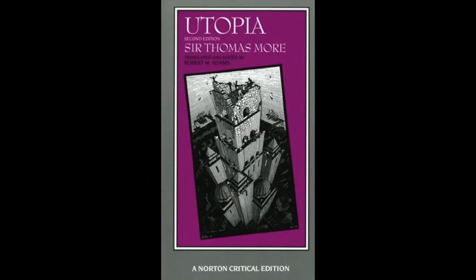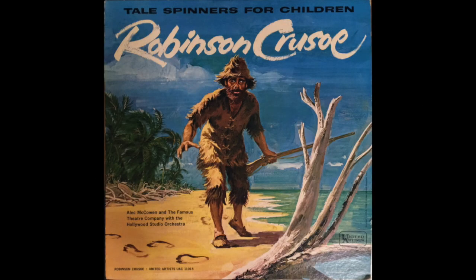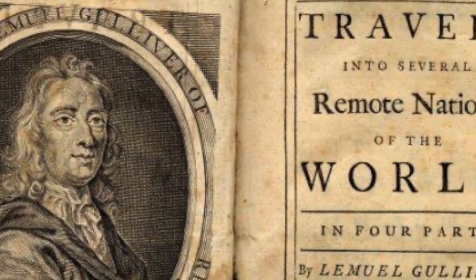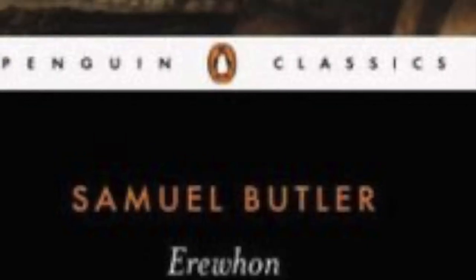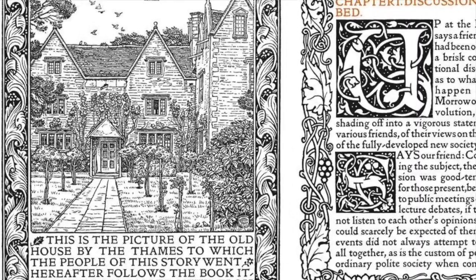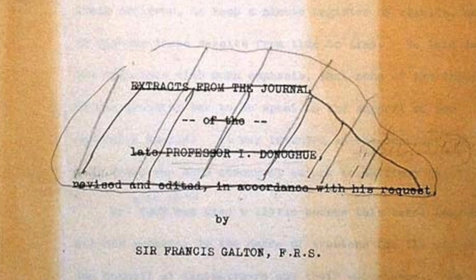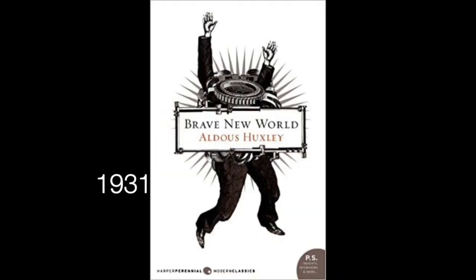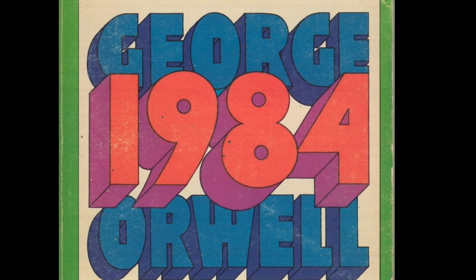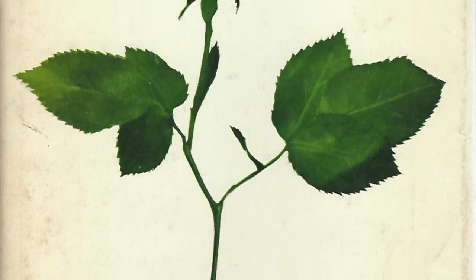There are countless stories like this in British literature. In addition to Sir Thomas More's Utopia, we have Daniel Defoe's Robinson Crusoe, Jonathan Swift's Gulliver's Travels, Samuel Butler's Erewhon, William Morris' News From Nowhere, Sir Francis Galton's Can't Say Where, Aldous Huxley's Brave New World, George Orwell's 1984, and Anthony Burgess's The Wanting Seed.